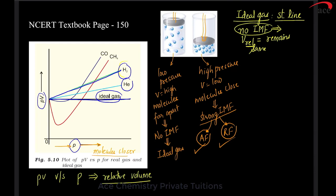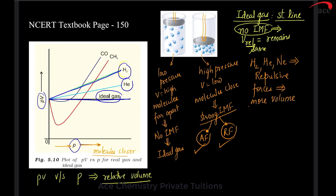Why is the line for hydrogen and helium above the ideal gas line? The reason is that hydrogen, helium, and neon are three gases which have repulsive forces. If they have repulsive forces, they will occupy more volume — repulsive forces make molecules go apart, and when molecules go apart they occupy more volume. Because hydrogen and helium occupy more volume, their line is above the ideal gas line.